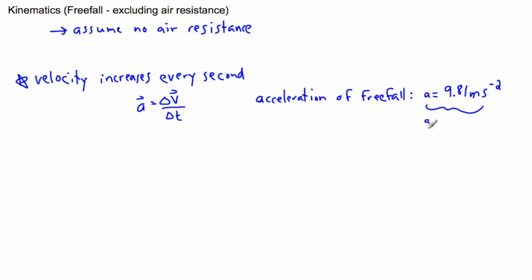Sometimes we call this g. Some people like to write g equals 9.81 meters per second squared - that's perfectly fine. But this only works on Earth at sea level.